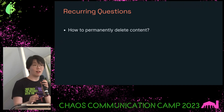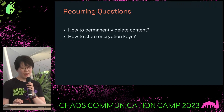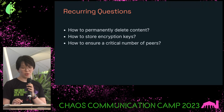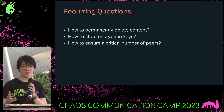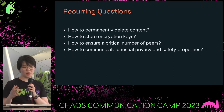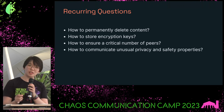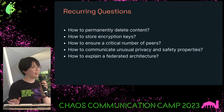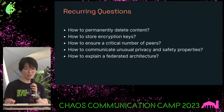How to permanently delete content — this is a very common question if you're working P2P. How to store encryption keys? Where to store them if you have multiple devices and no central authority? How to ensure a critical number of peers being online so that content can be replicated? How do you communicate the unusual privacy and security properties of your new technologies? How do you even explain a federated architecture? I think we saw a lot of that with the migration to Mastodon — how to do it and how not to do it.